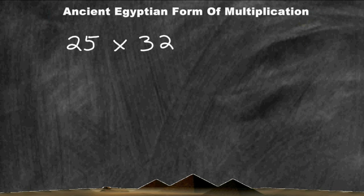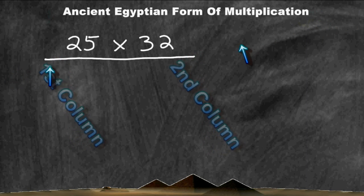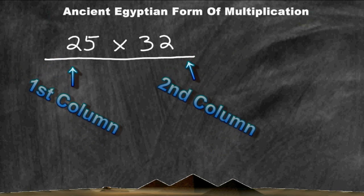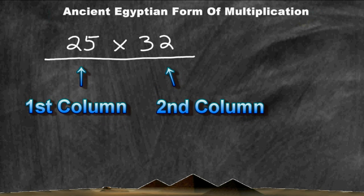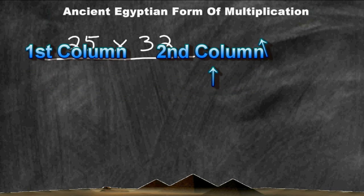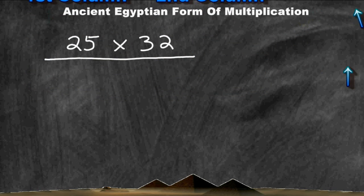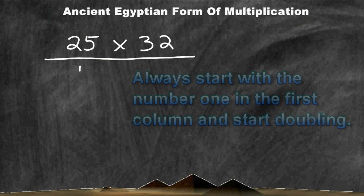The first thing that you have to do is write your problem out horizontally. The first number we will consider our first column, and the second number we will consider our second column. Underneath the first column, you always write the number 1, regardless of the number that is at the top of the column.